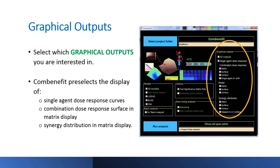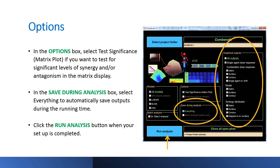Next, select which graphical outputs you are interested in. ComBenefit pre-selects the display of single-agent dose-response curves, combination dose-response surface in matrix display, and synergy distribution in matrix display. You can remove or add other graphical outputs based on your needs. In the Options box, select Test Significance if you want to test for significant levels of synergy or antagonism in the matrix display. Note that for this option you need to have replicates. In the Save During Analysis box, select everything to automatically save ComBenefit outputs during the running time. Click the Run Analysis button when your setup is completed.